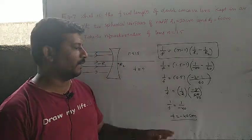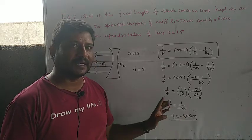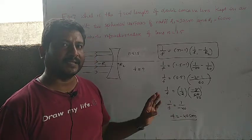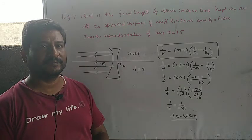f equals minus 40 centimeters. Here the negative sign indicates the lens is divergent or concave lens. Thank you.